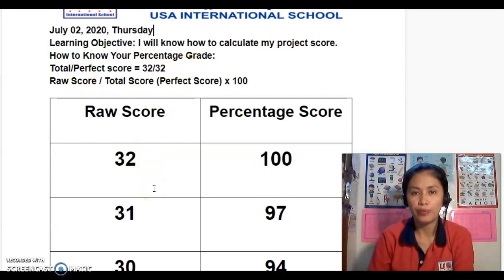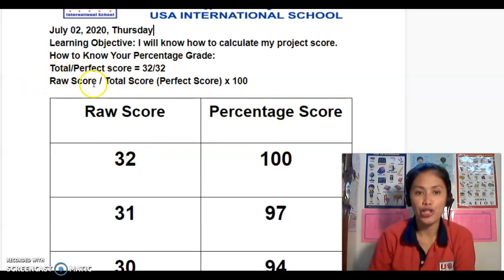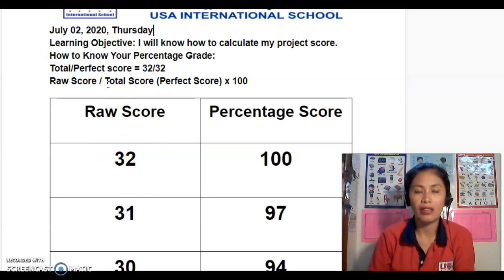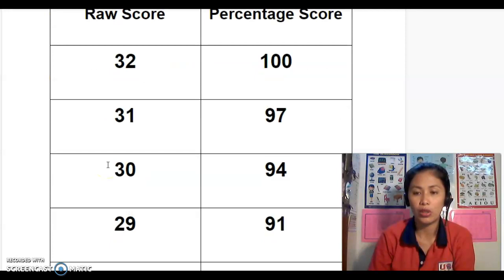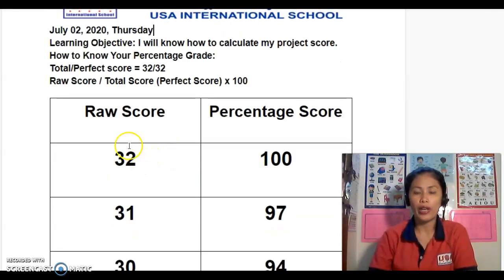So how am I going to change your raw score to a percentage score? What we're going to do is take your raw score — for example 32 — divided by 32, times 100, and that will be your score. I've already computed it, so if you get 32 you get 100 as your percentage score.